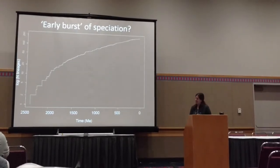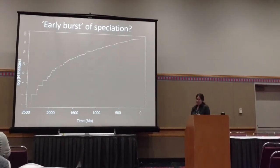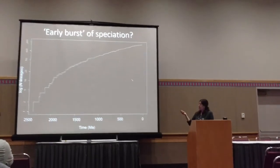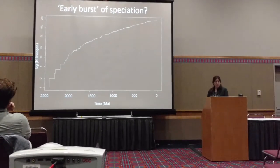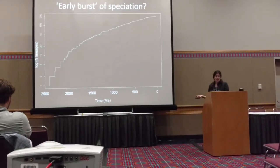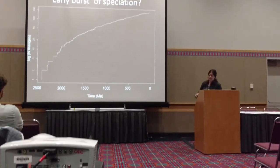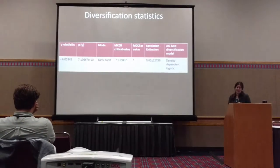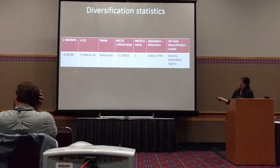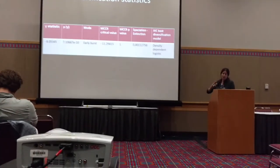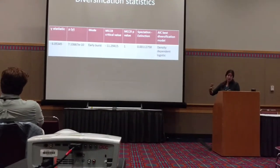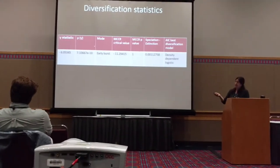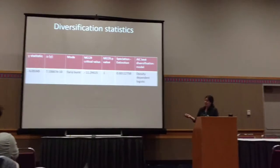I wanted to play around and apply phylogenetic comparative methods to see if there really was an early burst of speciation in the early evolution of proteobacteria. From the lineage-through-time plot it visually looks like early burst speciation. The gamma statistic — which indicates a slowdown in diversification rate when less than zero — gave a quite highly negative value and a significant p-value, suggesting an early burst.